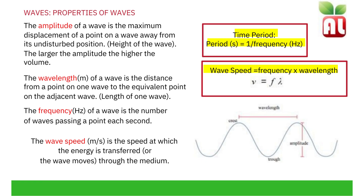The wave speed, measured in meters per second, is the speed at which energy is transferred through a medium. To calculate time period in seconds, we do one divided by the frequency in hertz. This tells us the time taken for one wave to pass a point. Wave speed can be calculated by multiplying frequency and wavelength. These equations are not on the physics equation sheet and therefore need to be learnt.